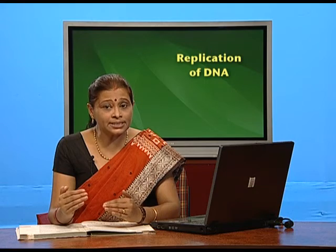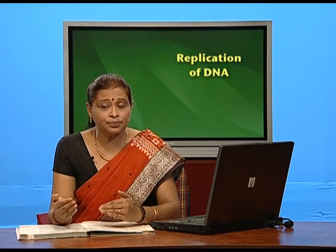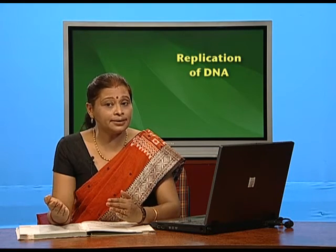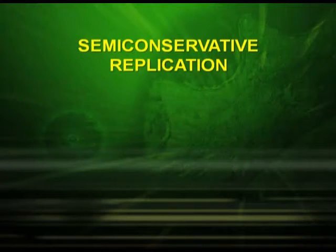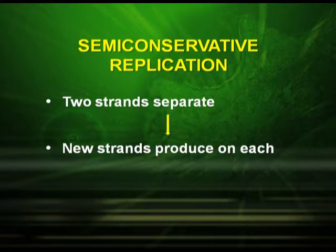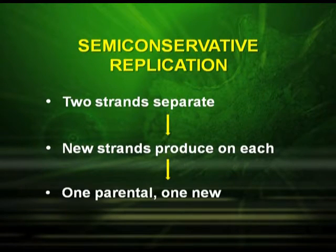Now let us see how it was experimentally proved which model is correct. In semi-conservative replication, the two strands separate and new strands are produced on each, in which one is parental and one is new.